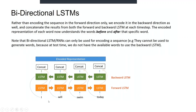If we try to simulate with a sentence called 'I will swim today' — in a forward LSTM, 'I' would be passed to the first timestamp, 'will' to the second timestamp, 'swim' to the third timestamp, and 'today' to the fourth timestamp, and then it generates an output. The forward LSTM moves from left to right.